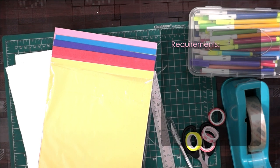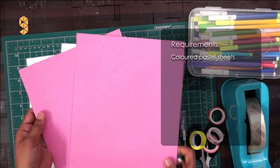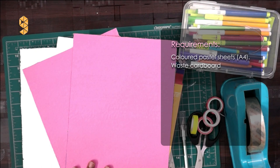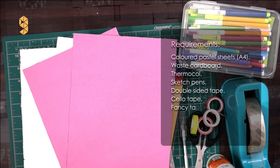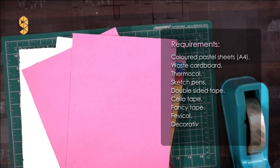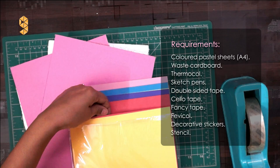What all is required to make this game? Colored pastel sheets A4 size, waste cardboard, thermocol, sketch pens, double-sided tape, cello tape, fancy tape, fevicol, some stickers for decoration, and an alphabet stencil.